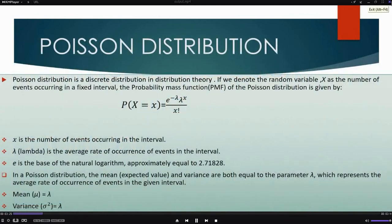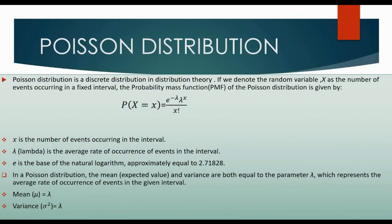Before going to the fitting, we must know what is Poisson distribution. Poisson distribution is a discrete distribution in distribution theory. If we denote the random variable X as the number of events occurring in a fixed interval, the probability mass function of the Poisson distribution is given by P(X = x) equals e to the power minus lambda, lambda to the power x, divided by x factorial.